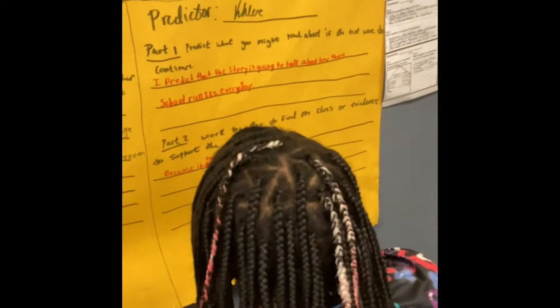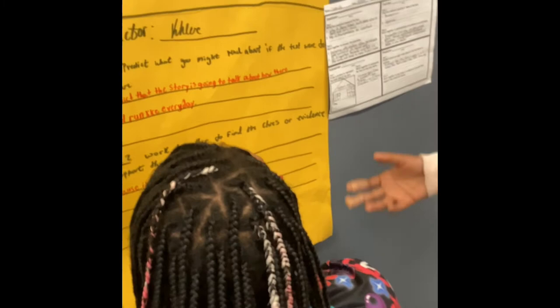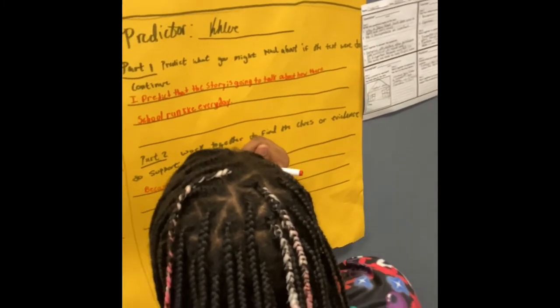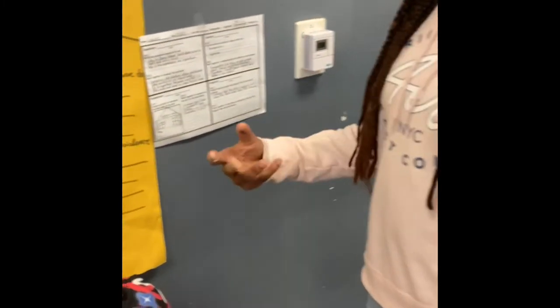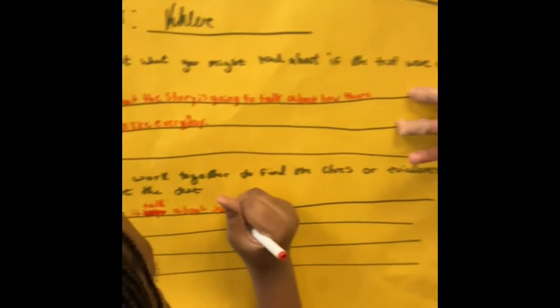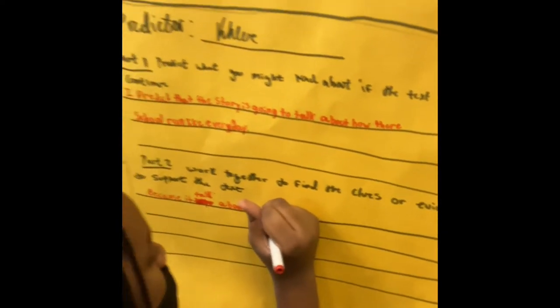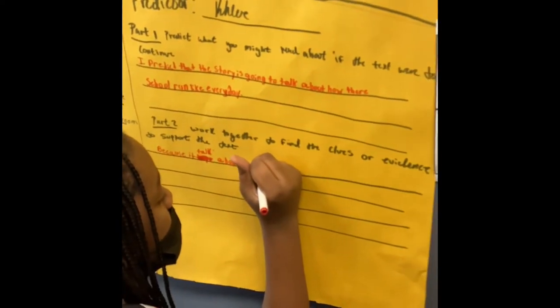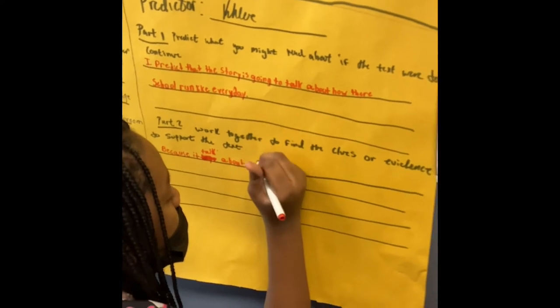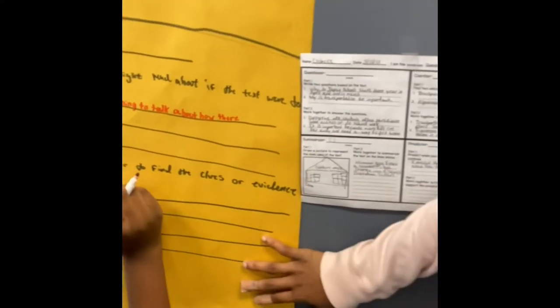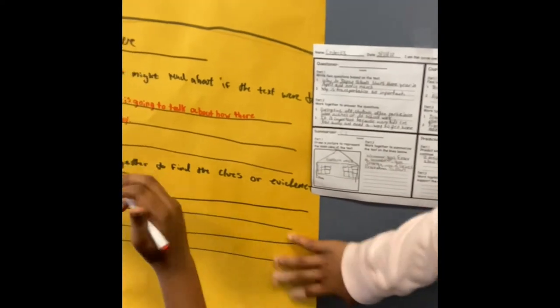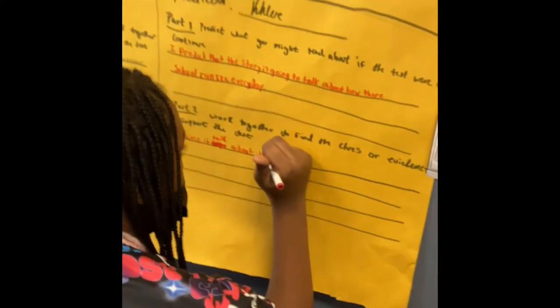Now here, Chloe's talking about her prediction of the story. The story is called 'Eight Differences Between Japanese and American Schools.' She wrote for her prediction: I predict that the story is going to talk about how their school runs every day. And then she's still working on her supporting details.